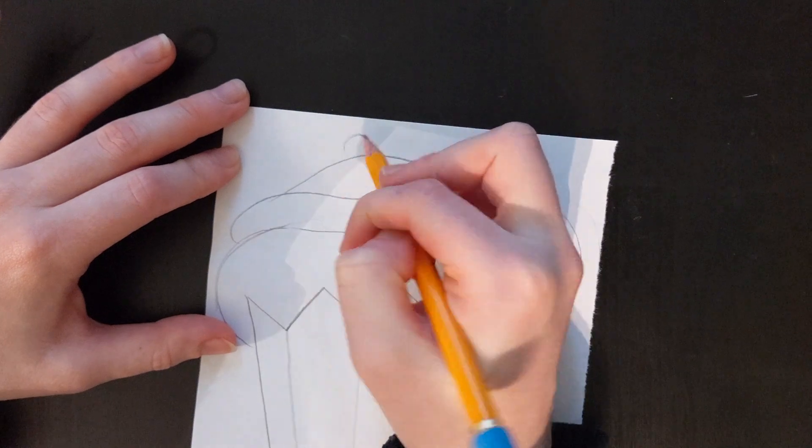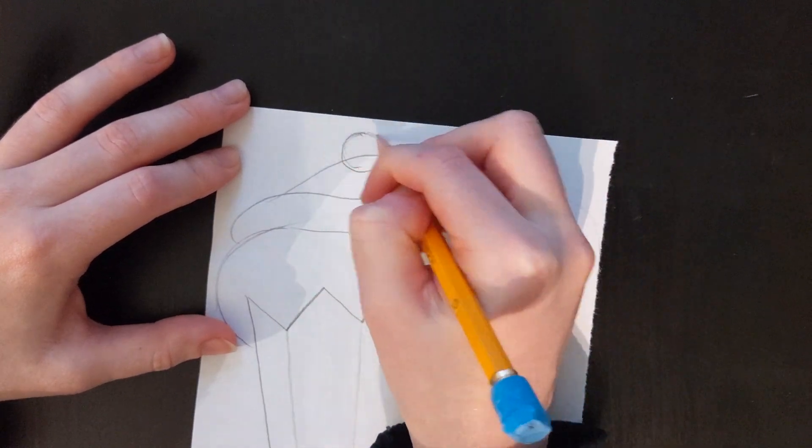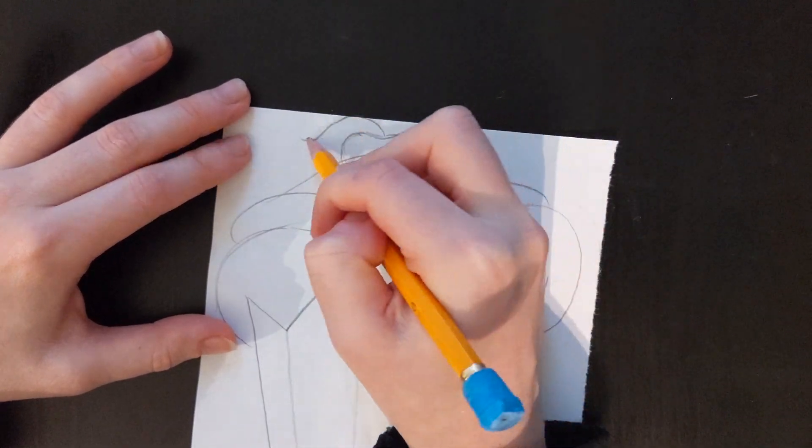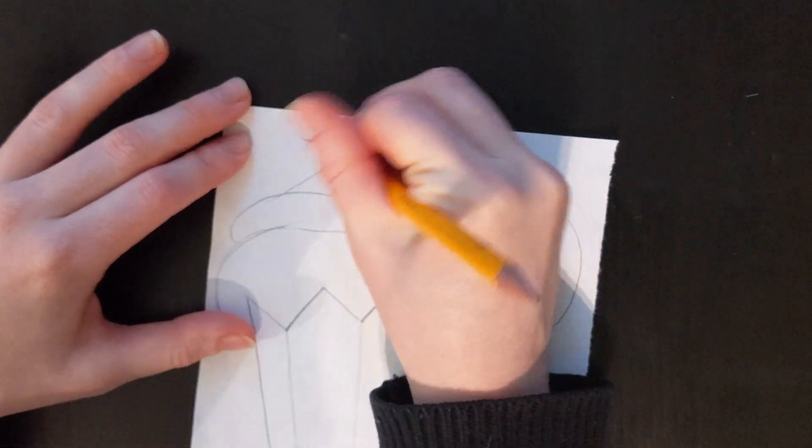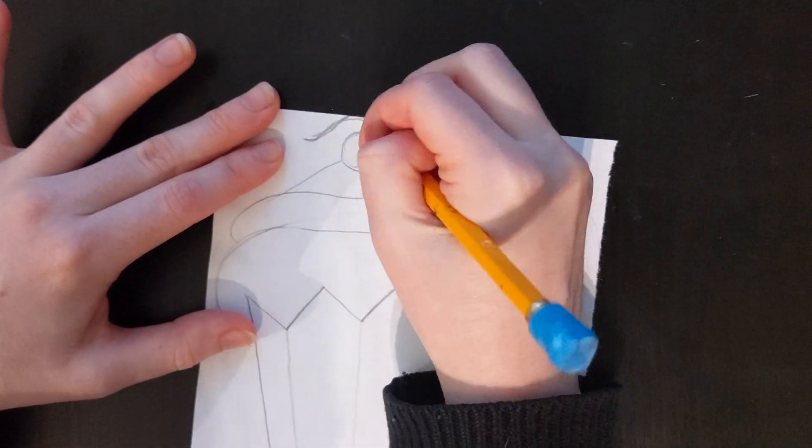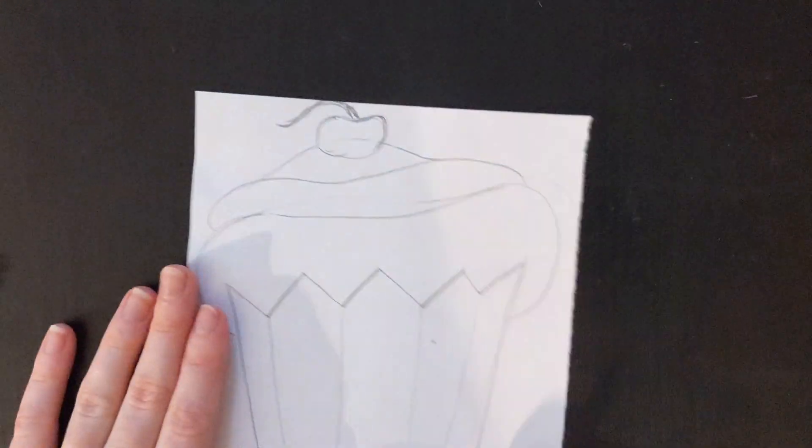On the top, I am going to add in a cherry. So a cherry on the top. This is my cherry. You'll be able to see it better once I outline it with a black marker.